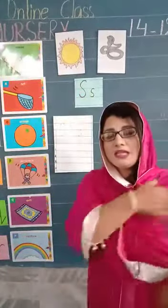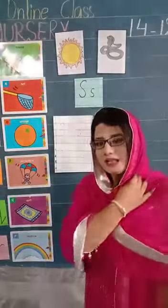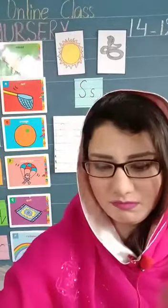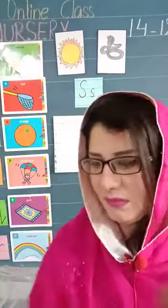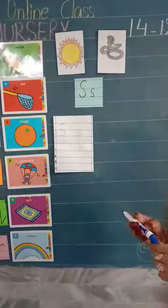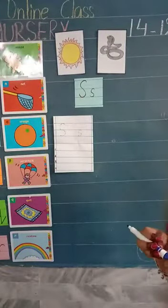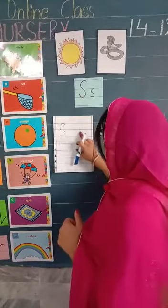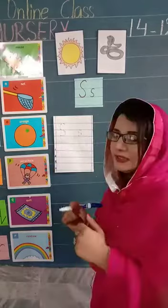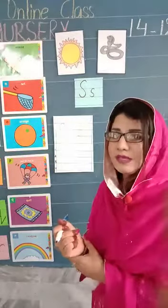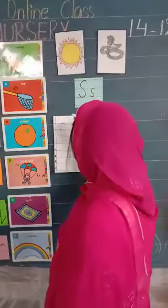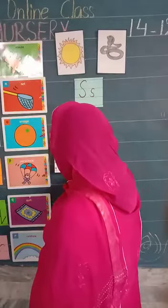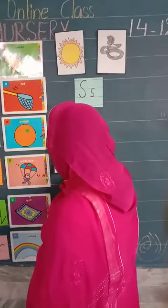Ab madam aap ko batayein gi ke S likhte kaise hain? Okay, hamari book ke upar is tarah dotted form mein S likha hua hai. To madam aapko batati hain ke S hum kaise likhenge? Start with the first dot, and then join the dots and draw a semi circle.